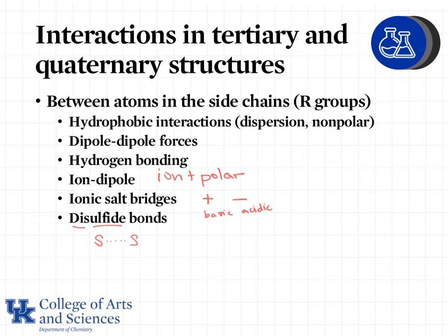Disulfide bonds are commonly seen in the fibrous proteins in our hair. If you've ever had your hair permed to get it curled or straightened, what was actually done is they were breaking the naturally occurring disulfide bonds in your hair protein, then forcing them into a different shape and encouraging new and different disulfide bonds to form between different side chains so that you would either get straight or curly hair — changing the shape of your hair.